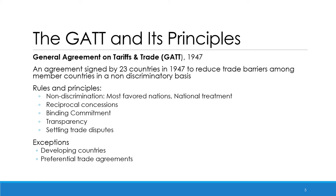The second principle of GATT is reciprocal concessions, meaning that I reduce my trade barriers against your products only if you agree to reduce yours against my products. This represents an effective strategy for countries to reduce their trade barriers. Another important principle is binding commitment, which means that you write down your maximum tariff rates, called bound rates, and you are committed not to raise your tariffs beyond this limit except under specific circumstances.